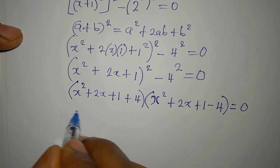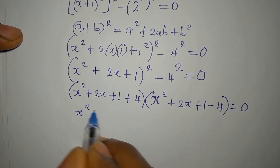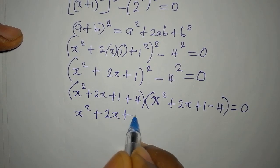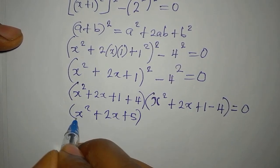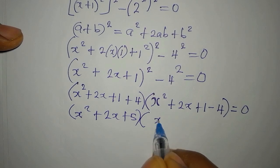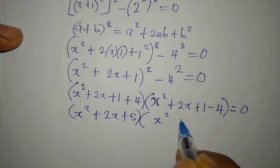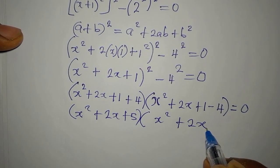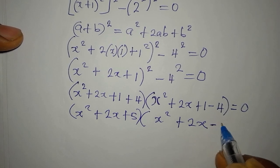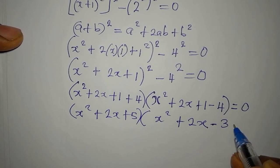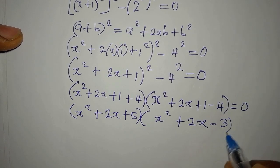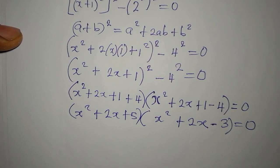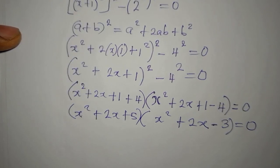Now simplifying, we have x squared plus 2x plus 5 in one bracket, and in the other we have x squared plus 2x minus 3, all equal to 0. So here we have two quadratic equations.